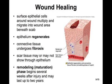Next is epithelial regeneration: surface epithelial cells around the wound multiply and migrate into the wound area beneath the scab. The connective tissue undergoes fibrosis beneath that. Scar tissue may or may not show through the epithelium depending on the depth and width of the cut. Then remodeling or maturation begins — this starts several weeks after the injury and could last up to two years as the site becomes less and less apparent.